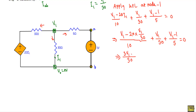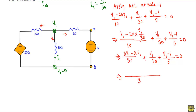Simplifying, I get: V1 − 2V1 + V1 + V1/30 + 5(V1 − 1) = 0, which gives V1 + V1 + 6V1 − 6 = 0, so 8V1 = 6, therefore V1 = 0.75 volts.